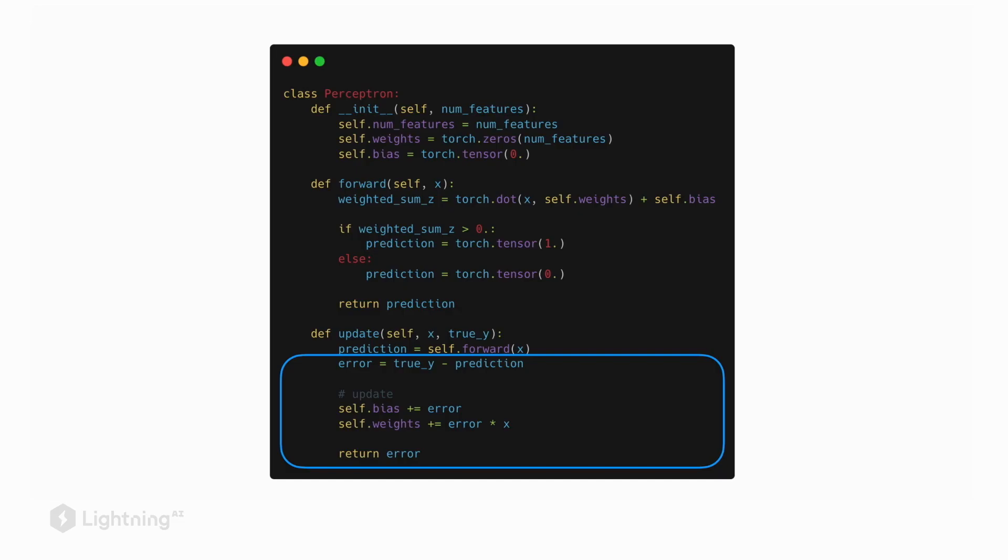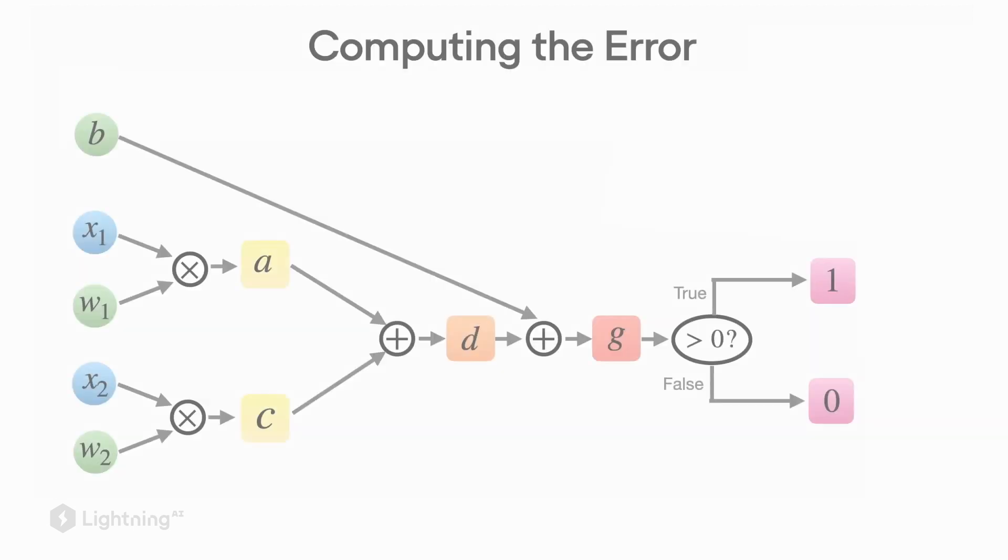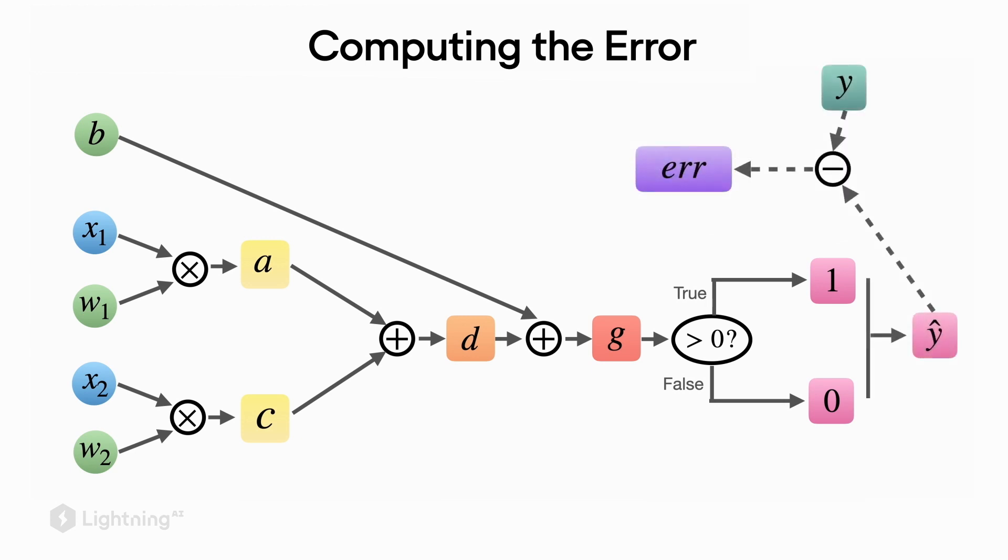However, what about the error computation? How does it play into this graph? The computation of the error involves the true label y and the predicted label y hat. Once we compute the error, we use it to update the model parameters.